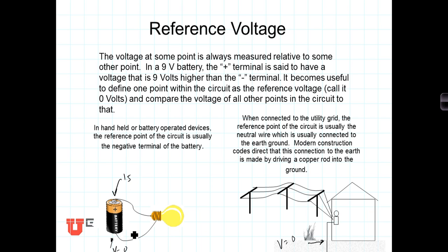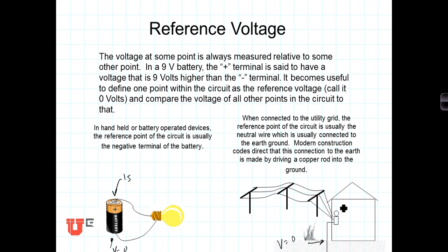In a battery-operated system the reference may have nothing to do with ground — a handheld cell phone has no reference to ground at all, only to the negative battery terminal. In a grid-connected system, ground is zero volts, and within your home voltages will be either 120 volts above ground or 120 volts below ground, giving a total of 240 volts difference between the lowest and highest points.